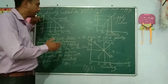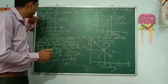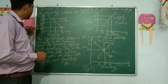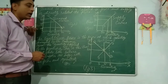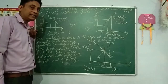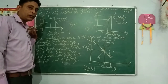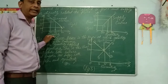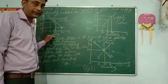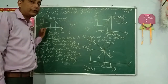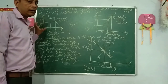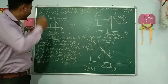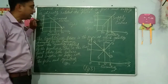Here in this demand curve diagram, we have drawn the OX axis and OY axis. The OY axis is the price axis, showing the price of a commodity. The OX axis is the quantity axis, which tells us at what price how much quantity is demanded.